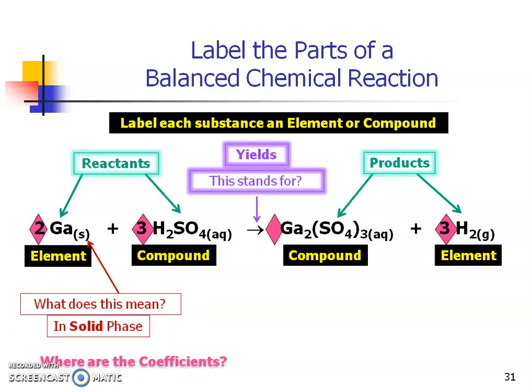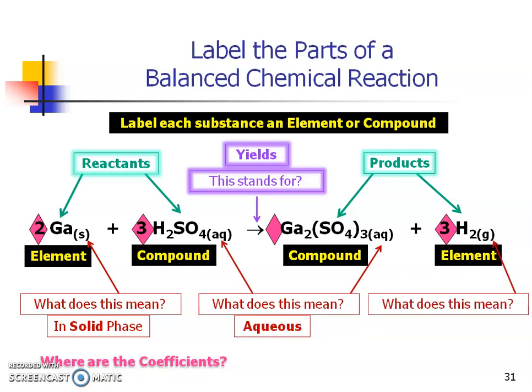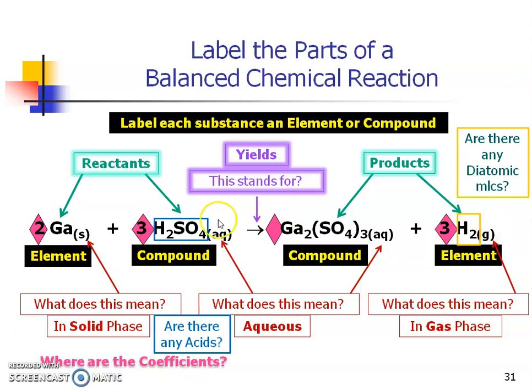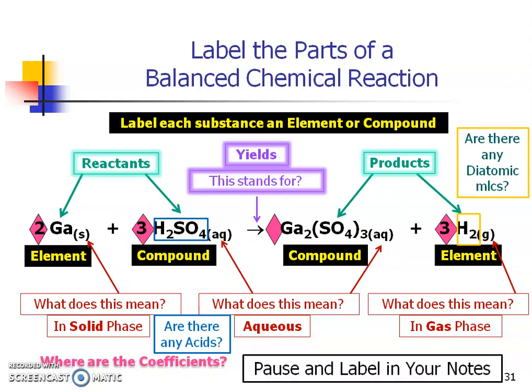What does that S mean? That S is going to say that it's in solid phase. The AQ means that it's aqueous, a solution. And the G means that it's a gas phase. Are there any diatomic molecules in our equation? Absolutely, that would be the hydrogen gas. Are there any acids? Yes, anything that begins with an H is an acid. In this case, it's sulfuric acid. At this point, I would pause and somehow either color coordinate it like I did, or you can do it any way you want. Maybe different highlighters. Just be light on the highlighting because of the notes packet. Pause the video and make sure to get that information on how to label those parts of a chemical reaction.